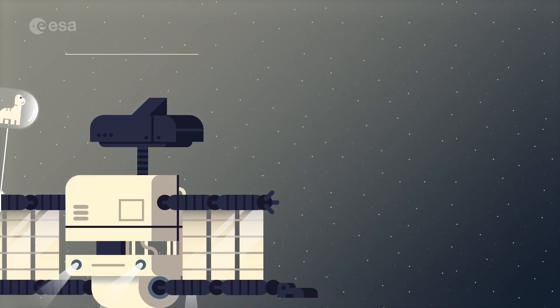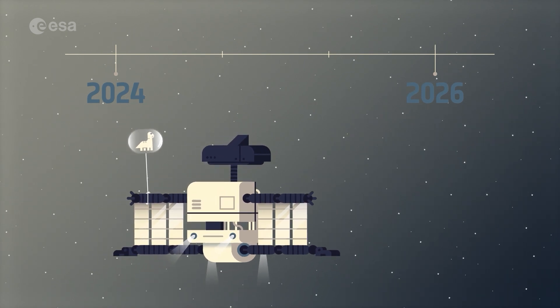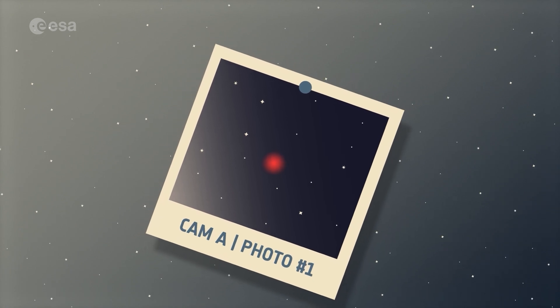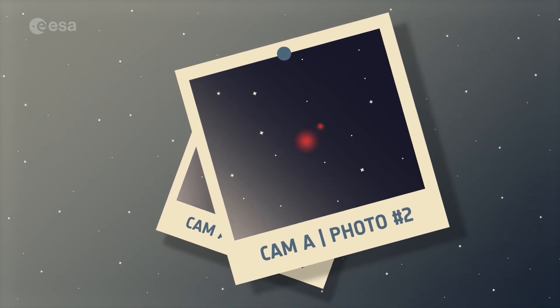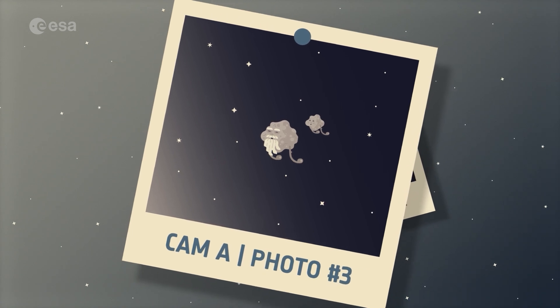HERA's cosmic road trip will take a little over two years. Eventually, her asteroid framing camera will spot Didymos and Demorphos, first looking like a single dot moving among the fixed stars, but eventually splitting into two. And then, the next stage of her mission will begin.